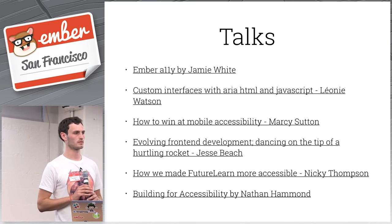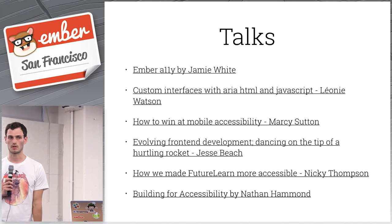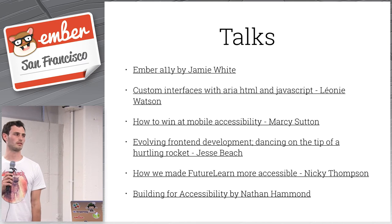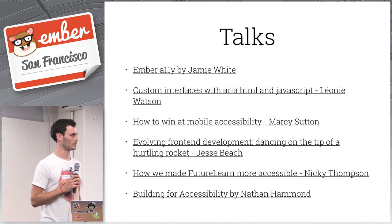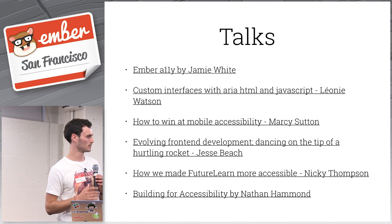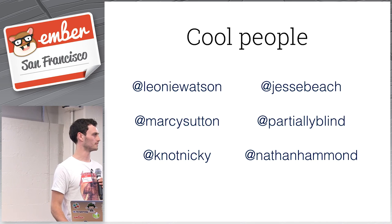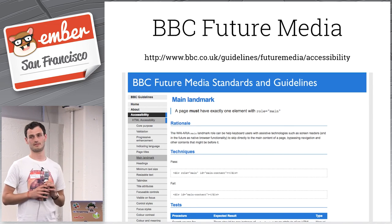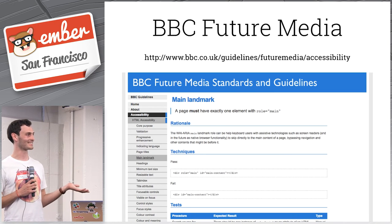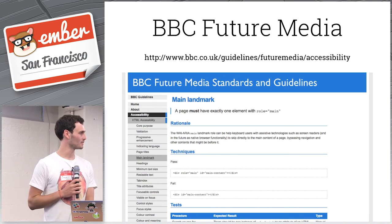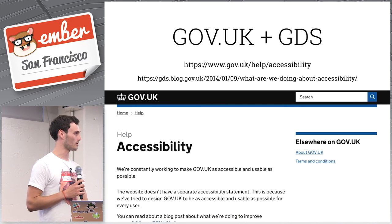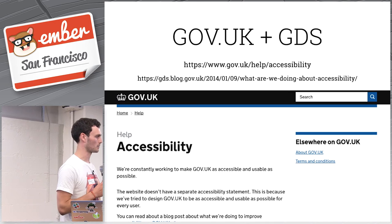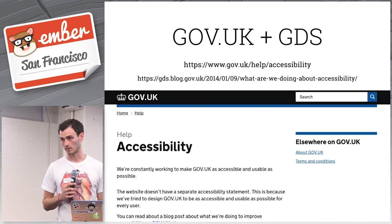There's a talk that Jamie White gave at the London Ember meetup — I recommend it. I haven't been able to find a recording, but there are slides with lots of links. I've basically copied all the links and content from his talk into mine, so these are all fantastic resources. The BBC provides a lot of guidance on making your website accessible, and so does the UK government's Government Digital Service — they have amazing open source stuff and very good accessibility guidelines.